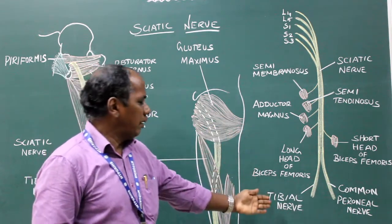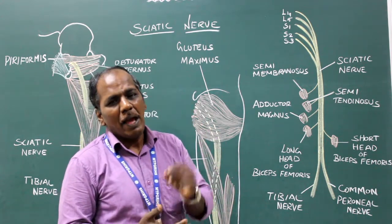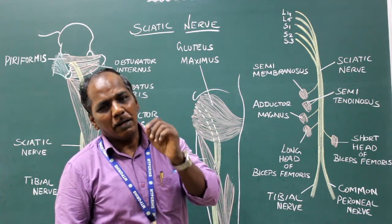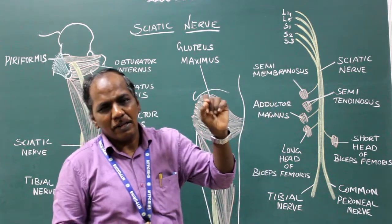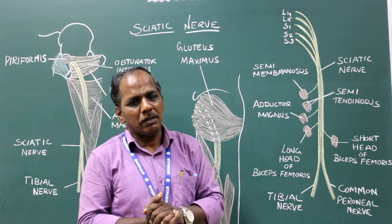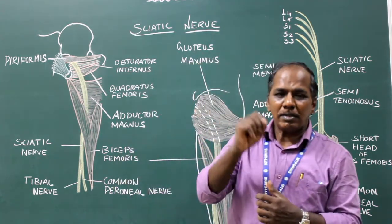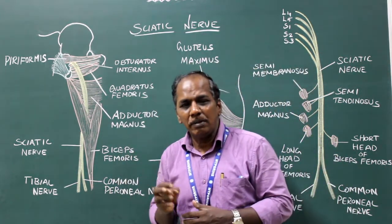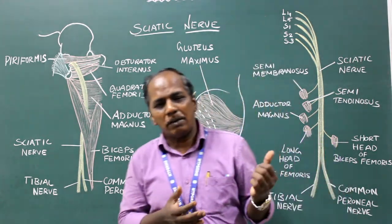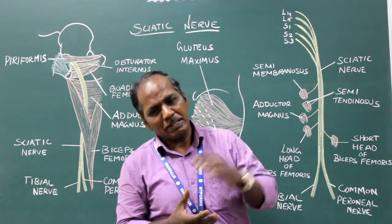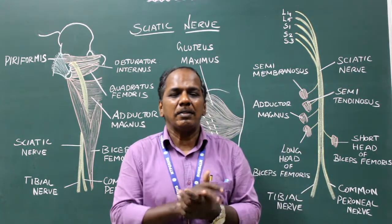The root value for the tibial component is the ventral division of the anterior primary rami of L4, L5, S1, S2, and S3 spinal nerves. The root value for the peroneal component is the dorsal division of L4, L5, S1, and S2 spinal nerves.